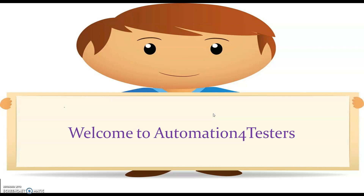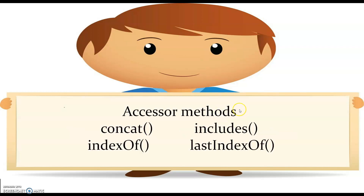Hi team, welcome to Automation for Testers. In this lecture we are going to discuss about accessor methods like concat, includes, indexOf, and lastIndexOf. If you are not sure what accessor methods mean, you can check out my earlier videos on arrays. We have three different types of methods: mutator methods, accessor methods, and iterator methods.